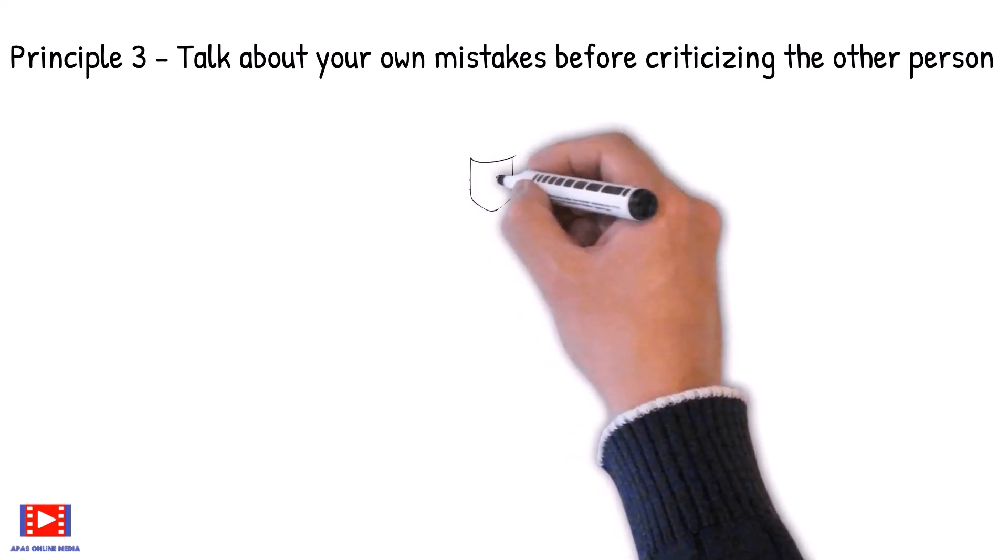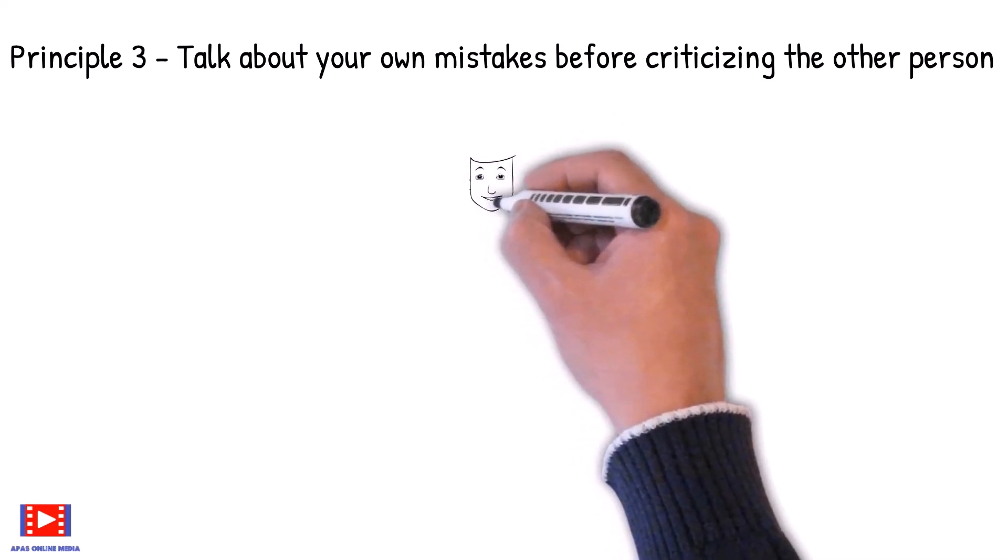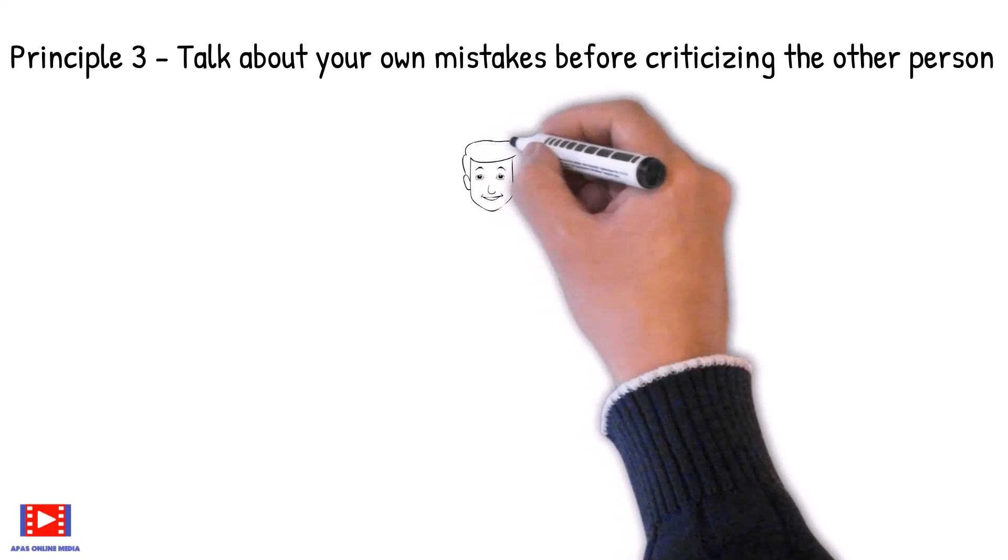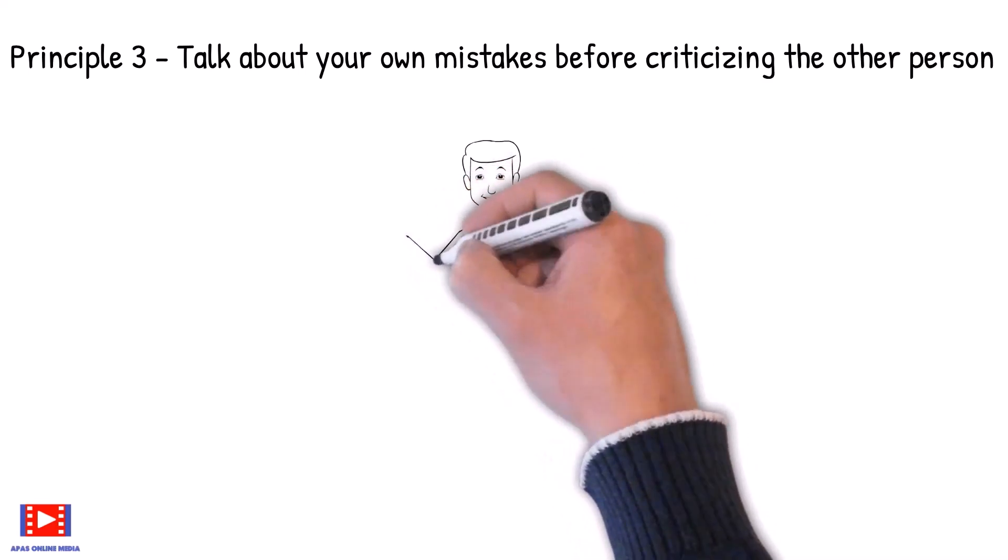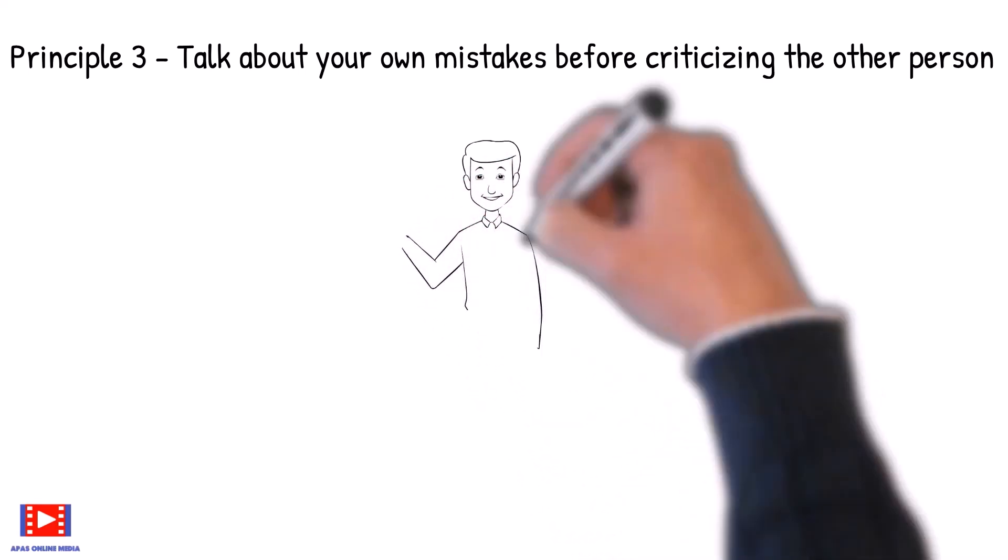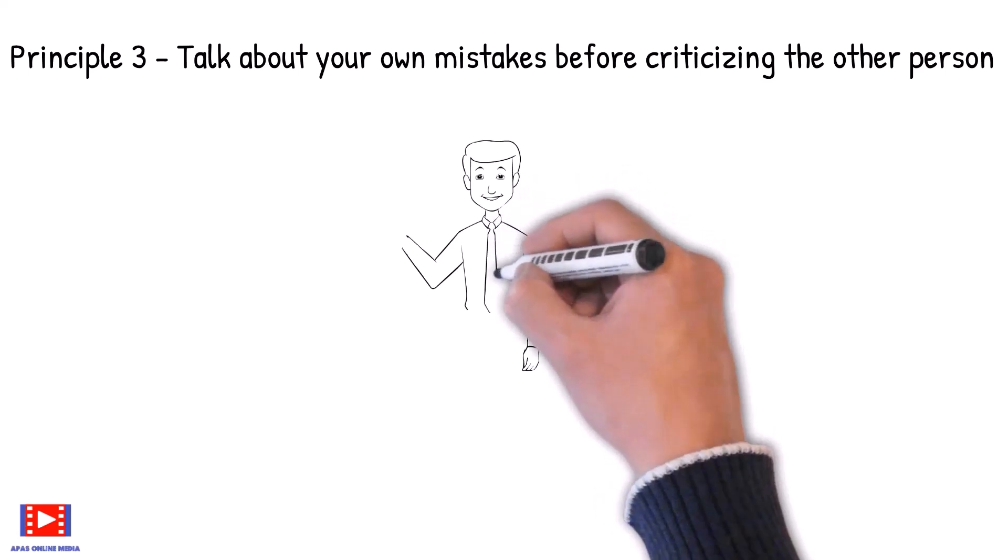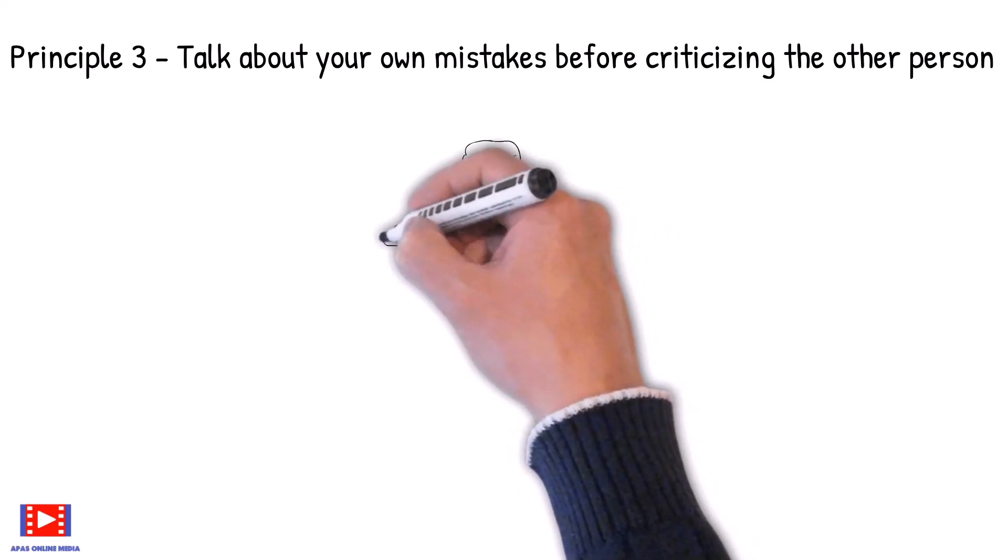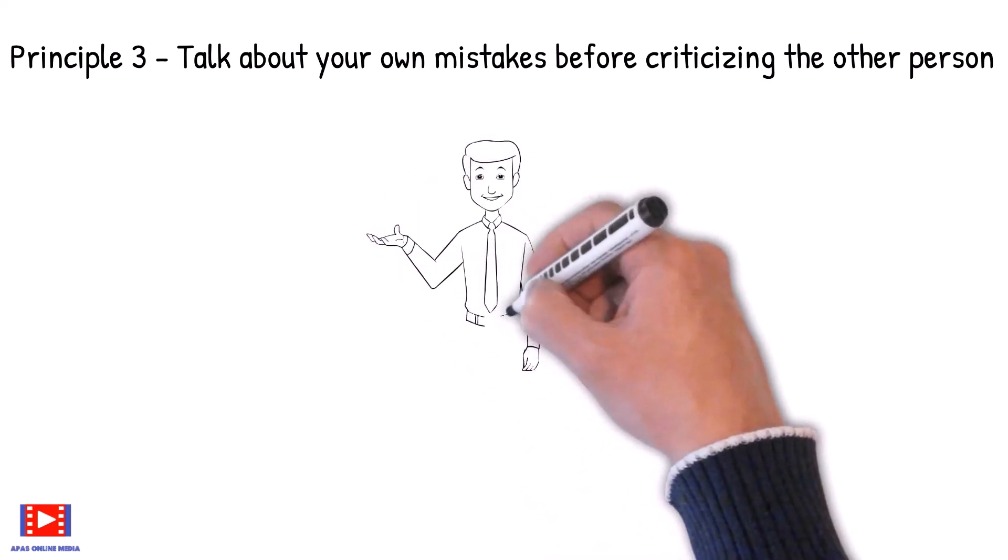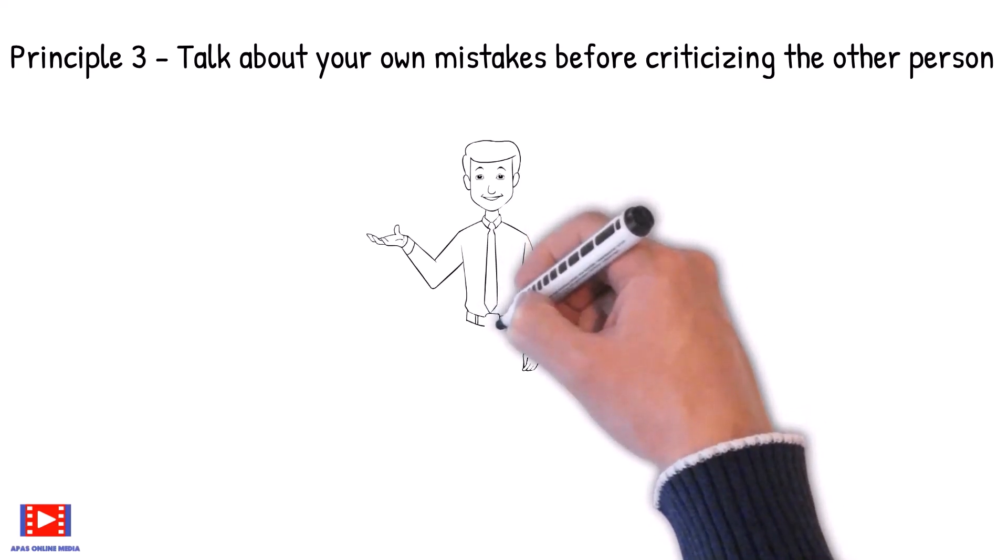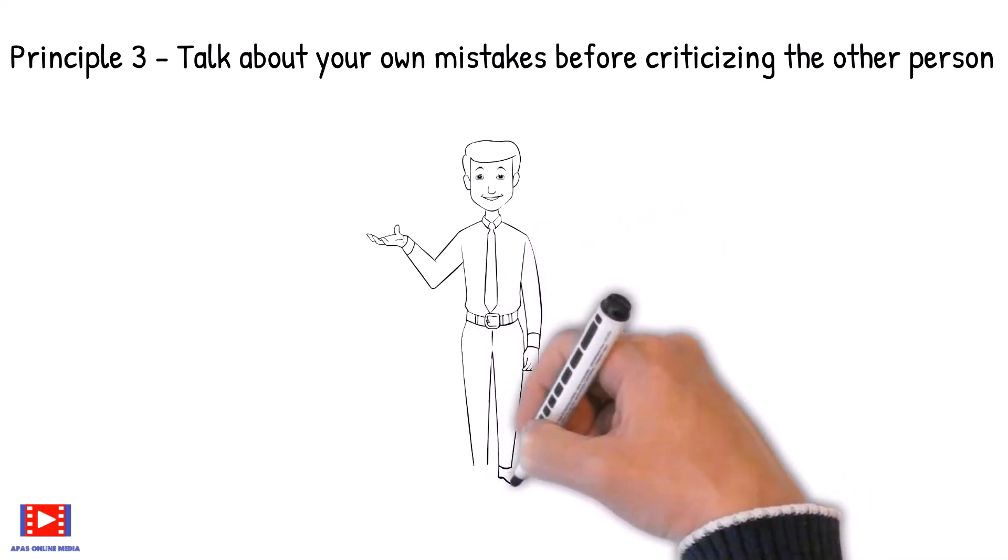Principle 3: Talk about your own mistakes before criticizing the other person. Admitting one's own mistakes, even when one hasn't corrected them, can help convince somebody to change his or her behavior. It isn't nearly so difficult to listen to a recital of your faults if the person criticizing you begins by humbly admitting that he too is far from impeccable.